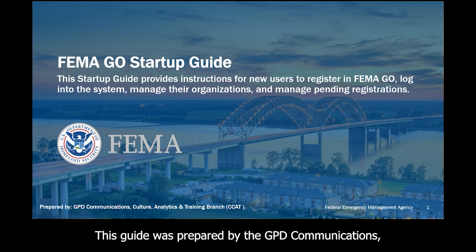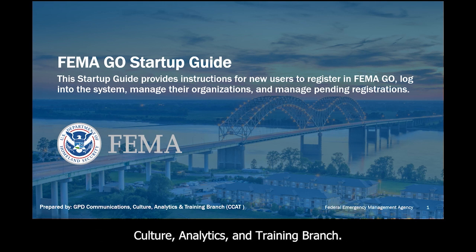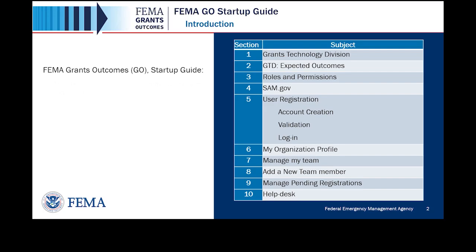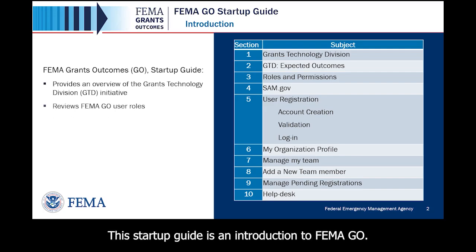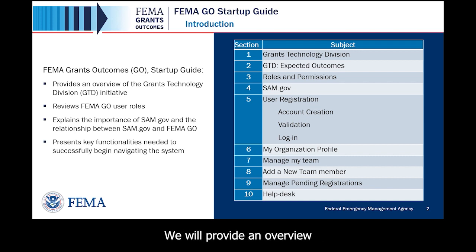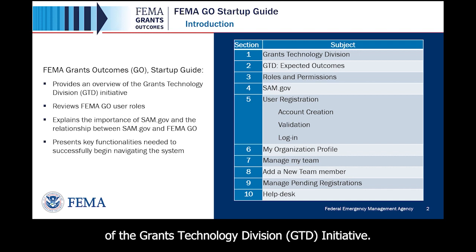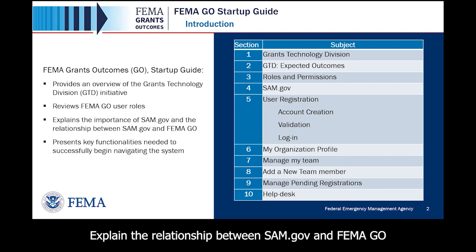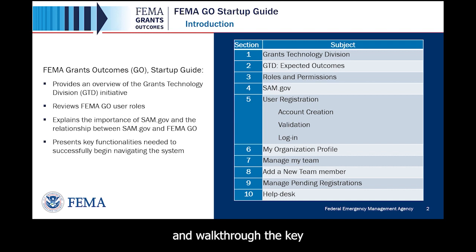This guide was prepared by the GPD Communications, Culture, Analytics, and Training Branch. This Startup Guide is an introduction to FEMA GO. Within this Startup Guide, we will be covering a few topics: an overview of the Grants Technology Division initiative, the FEMA GO external user roles, the relationship between SAM.gov and FEMA GO, and key functionalities of navigating the system.